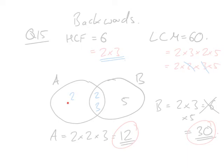The last thing we could do is swap two and five around, in which case A would be thirty instead of twelve, and B would be twelve instead of thirty.